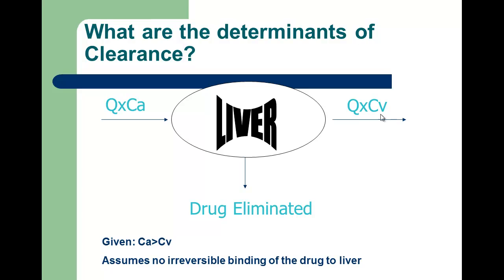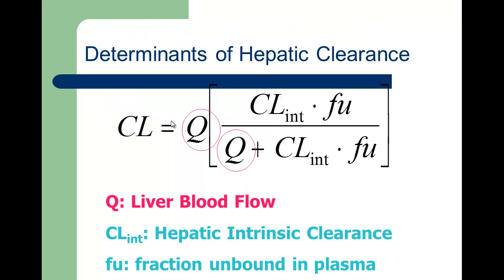If drug is removed, your arterial concentration will always be greater than your venous concentration. This also assumes there's no irreversible binding of the drug to the liver. According to the Wellster jar model, hepatic clearance equals Q times E, and we use this model to describe our extraction efficiency.